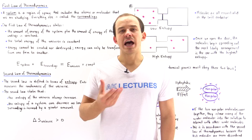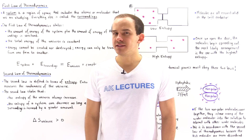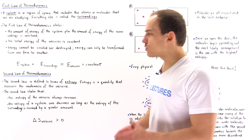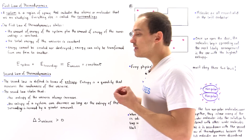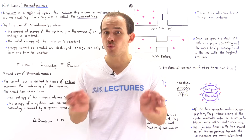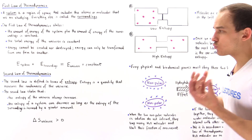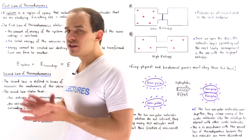All the different types of physical or chemical processes and reactions that exist in nature must obey the laws of thermodynamics. And that means any type of biological reaction that you're going to come across in your study of biochemistry must obey these laws. In this lecture we're going to focus on the first and second law of thermodynamics, because these laws essentially dictate the conditions under which a certain biological reaction is favorable and the conditions under which that same reaction is not favorable.